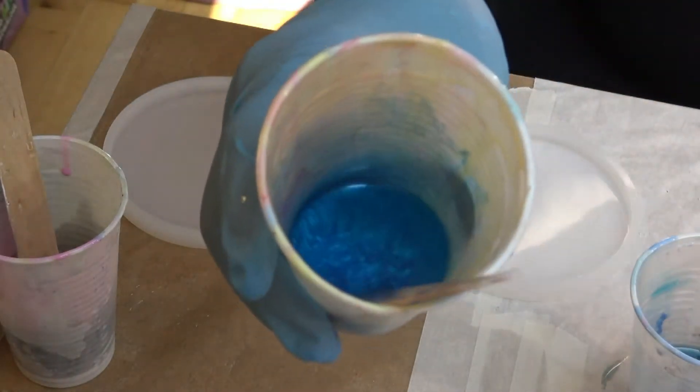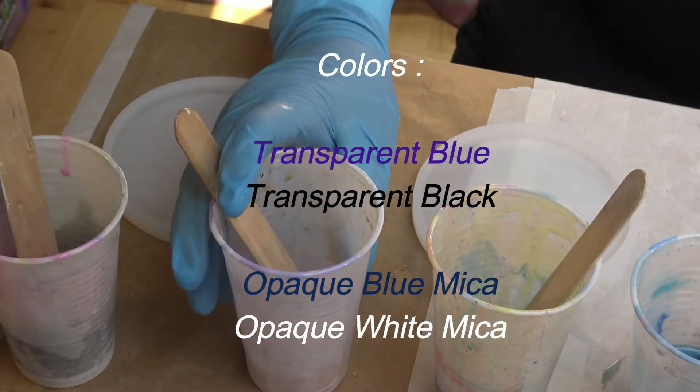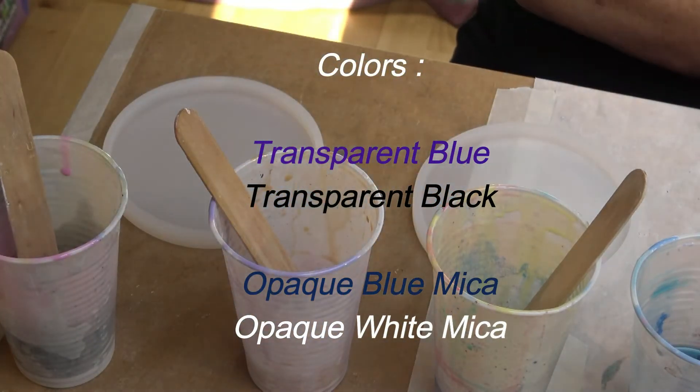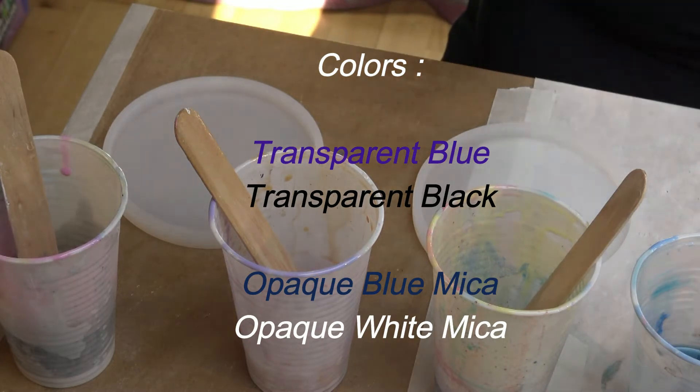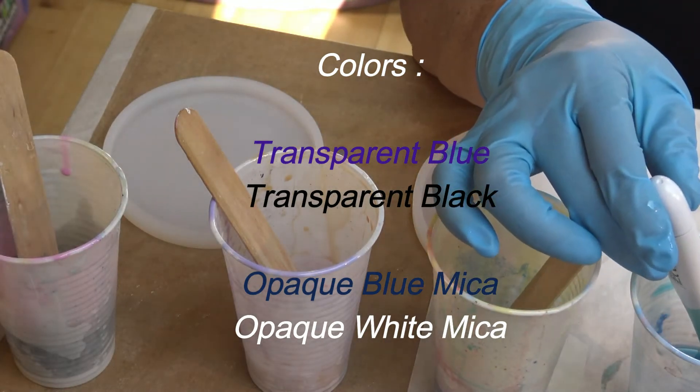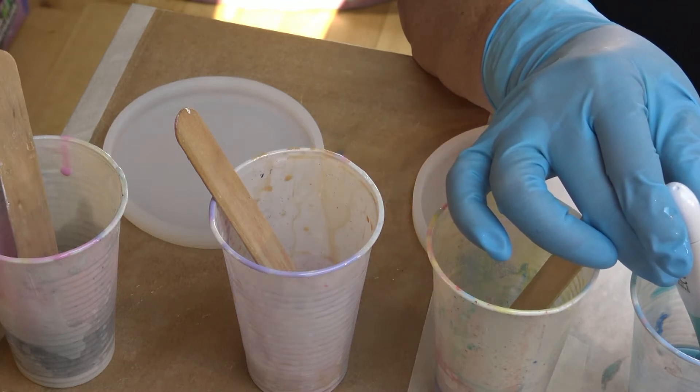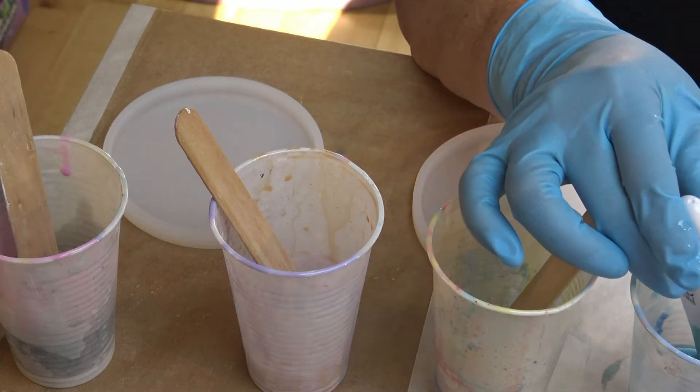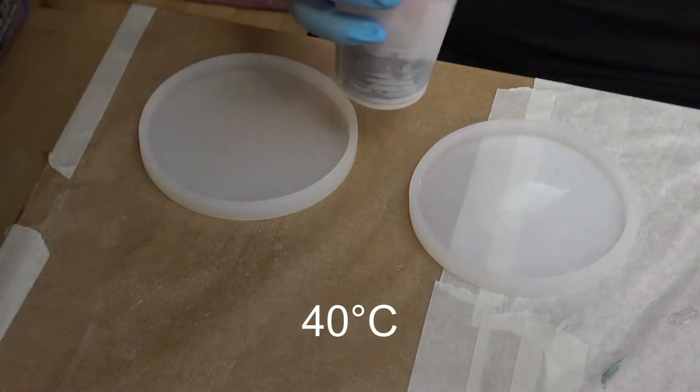I mixed up my colors and I will show you on the screen what colors are mixed. For that technique, it is important that you have opaque and transparent colors alternating each other, because otherwise it won't be the dragon scale effect. It will look much different.